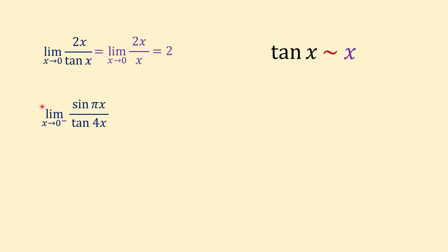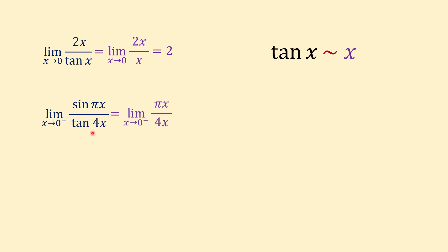Another example: limit of sine of pi x over tangent of 4x as x approaches 0 from the left. You might ask: can we make these substitutions for one-sided limits? Yes, we can. We can replace sine of pi x with pi x and tangent of 4x with 4x when x approaches 0 from the left or from the right. If we cancel x from numerator and denominator, the limit equals pi over 4.